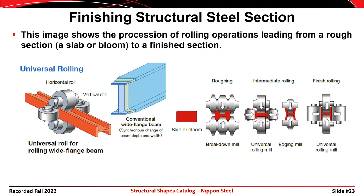The finishing process starts with a rolling operation. You go through a series of rollers that are the inverse of the shape you finally want. You start with a roughing and breakdown mill, then go to an edging mill, then a finishing mill. By rolling back and forth through a series of big rolling mills, you get from the rough section to the finished section.